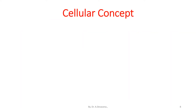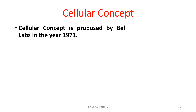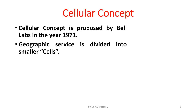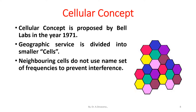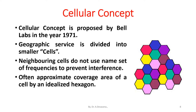The cellular concept was proposed by Bell Labs in the year 1971. Geographic service area is divided into smaller cells. Neighboring cells do not use the same set of frequencies to prevent interference, with an approximate coverage area of a cell represented by an idealized hexagon.